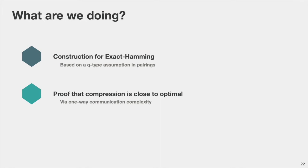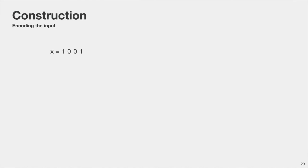So what are we doing in this work? We construct a new robust property preserving hash function for the exact Hamming distance predicate, based on a new q-type assumption in pairing-friendly groups. We show that our compression rate — the size of the hash output of our construction — is close to optimal.